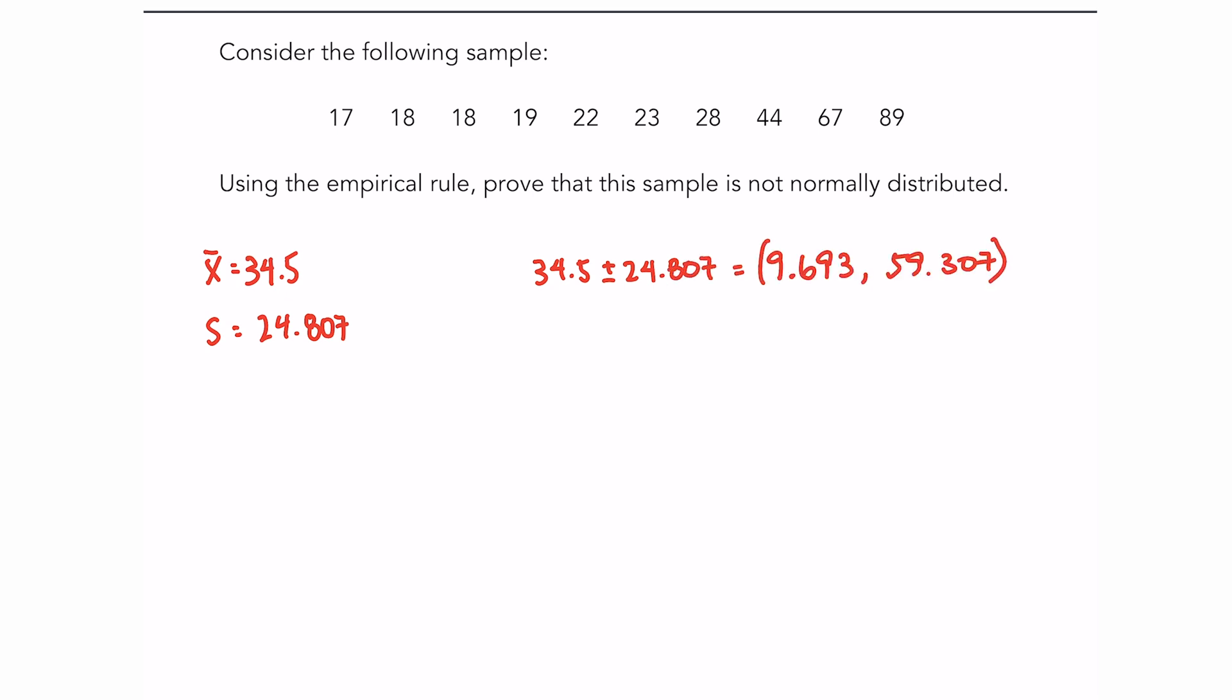I would find a range of 9.6 to 59.3. Now if I went to count how many sample points are within that, it would basically be all of them except the last two. So all of these - so that's 8 out of 10, that's 80% of the data.